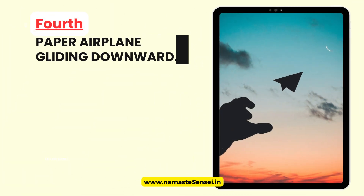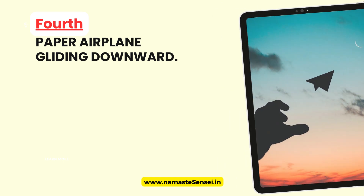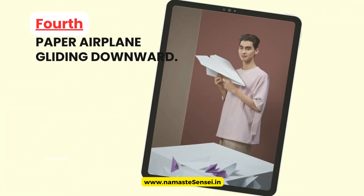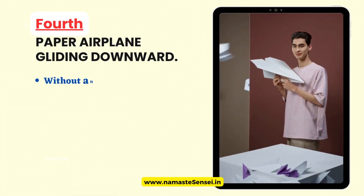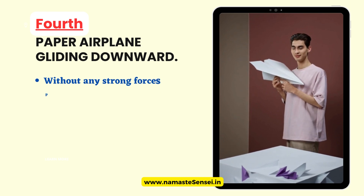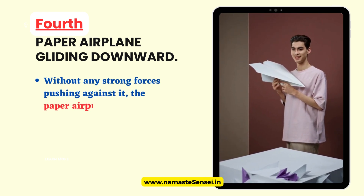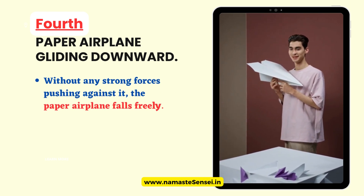Fourth, Paper Airplane Gliding Downward. When a paper airplane glides downward, it follows the path set by gravity. Gravity pulls the airplane toward the ground, causing it to accelerate as it descends. Without any strong forces pushing against it, the paper airplane falls freely, like any other object in free fall.